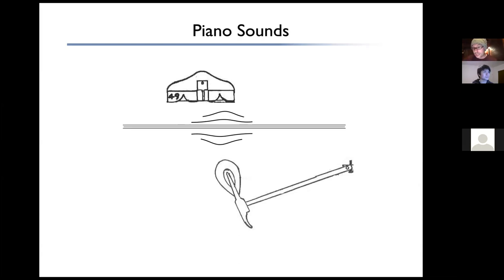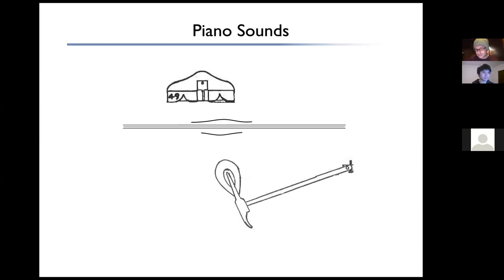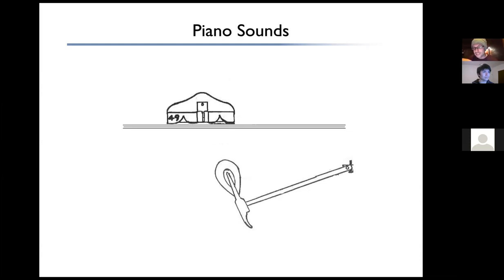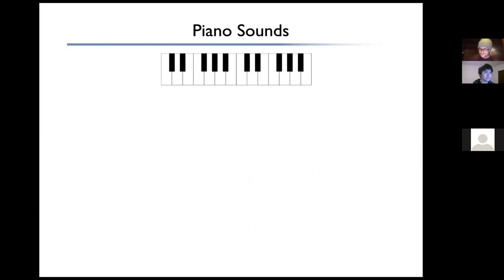There's a single point in time where you've inserted energy into that string. After that, whatever you do on the key — pressing harder or softer — makes no difference to the sound. As long as you hold the key, the damper stays up and the string resonates, emitting the mechanical energy as acoustic energy. As soon as you release the key, the damper falls back down and truncates any remaining sound.